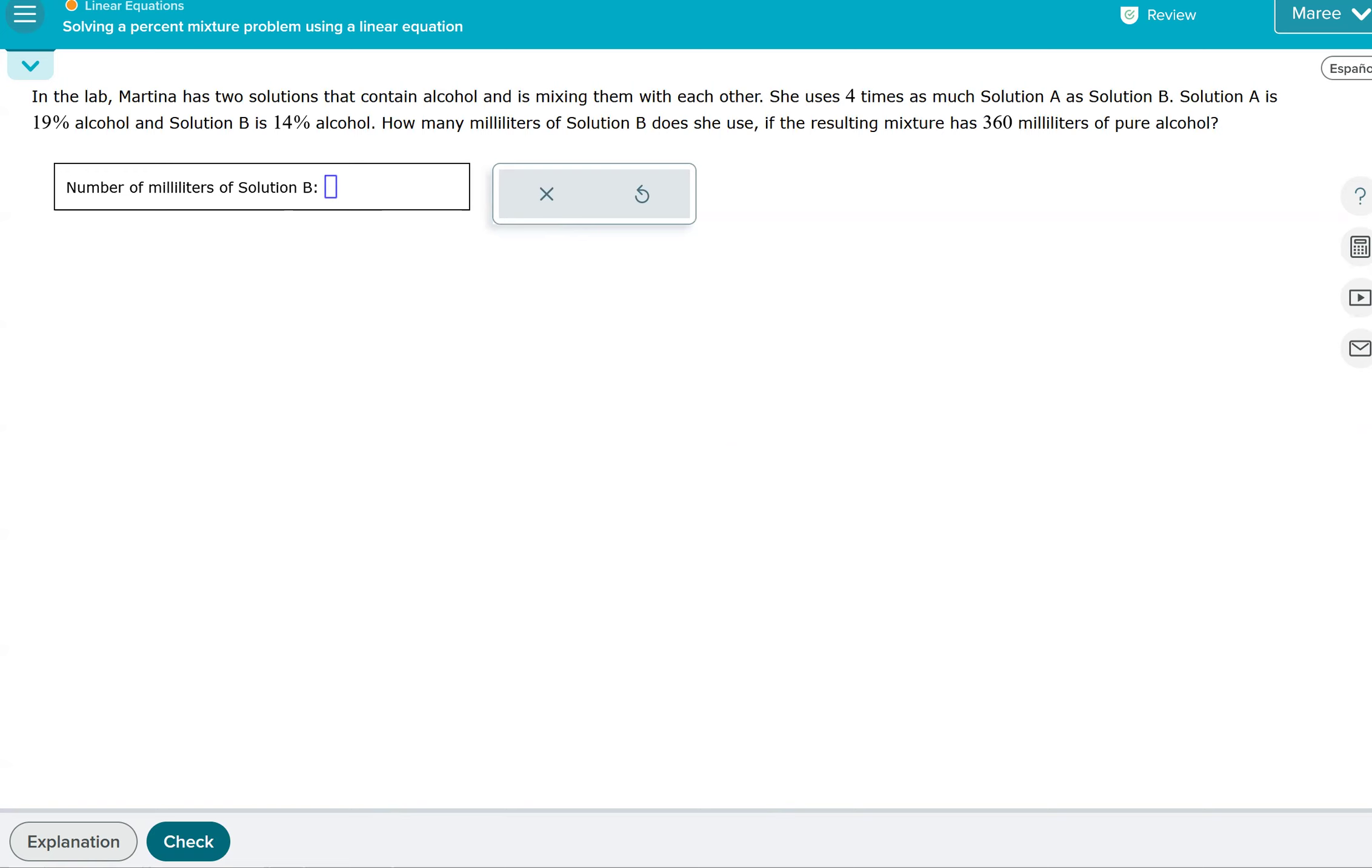So this is a lot like the first one we did. So we have solution A and solution B and then the total. So it says that she uses four times as much solution A as solution B. So we don't know B, but A is four times that.